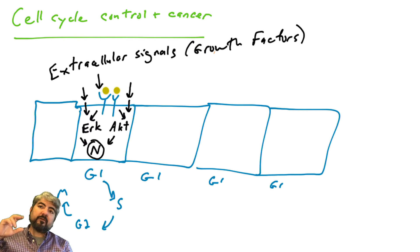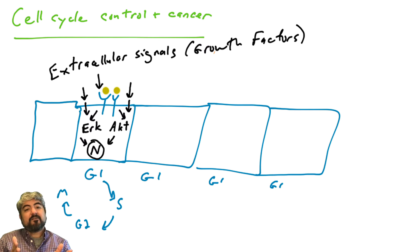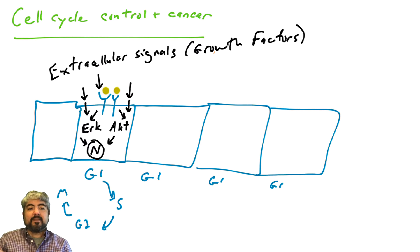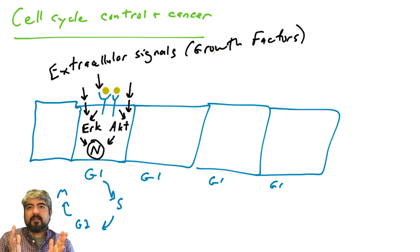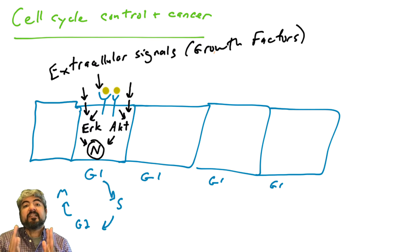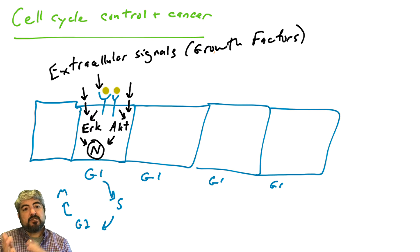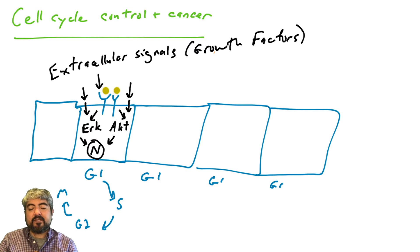That would be going from G1 phase to S phase, where DNA replication occurs, to G2, and then to M phase — mitosis — where you make more cells. In many cells of the human body, the ERK and the AKT pathway play essential roles in regulating the G1 to S transition, and we're going to focus on that in these videos.